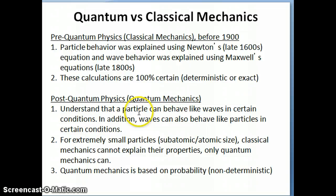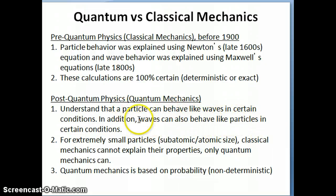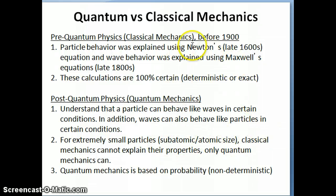In addition, we'll also see that waves — things like light, for example — turn out to behave in certain experiments like particles. The second piece of information we got from quantum mechanics is that if you're dealing with things that are really, really small — subatomic or atomic-sized particles — classical mechanics basically fails in terms of explaining how these particles work. It can't explain their properties or how they move, and only quantum mechanics can. That's the reason why we need this new theory.